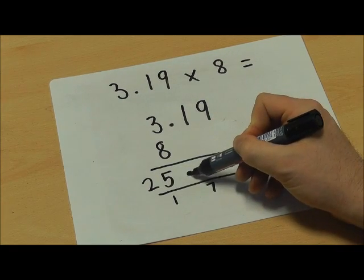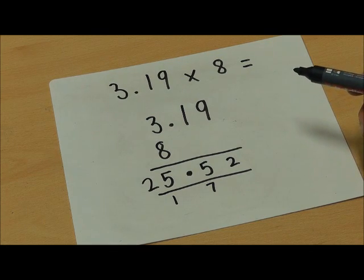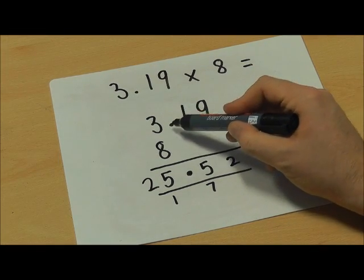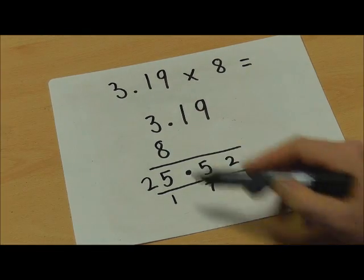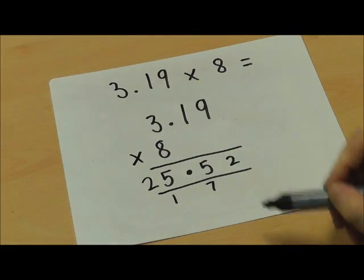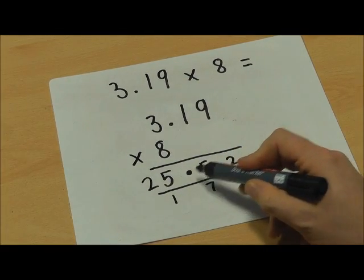Because I put my decimal point in the correct place at the start of the calculation I can now say that 3.19 multiplied by 8 equals 25.52.